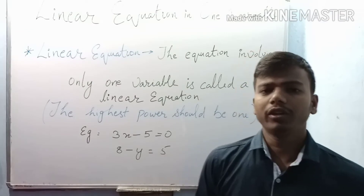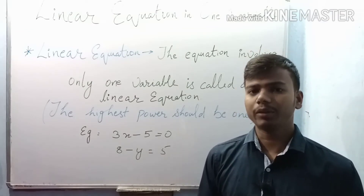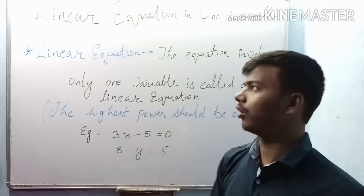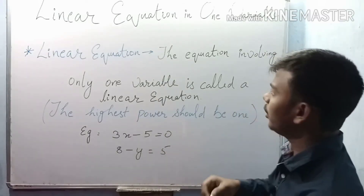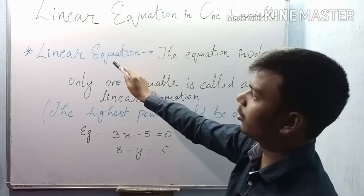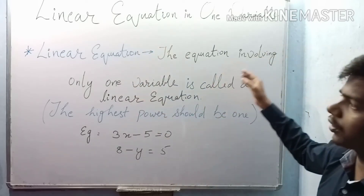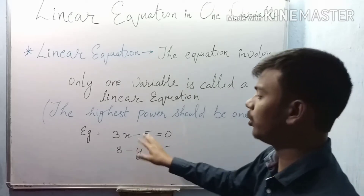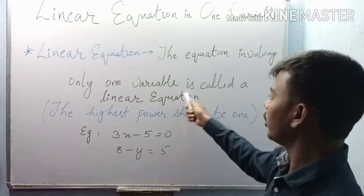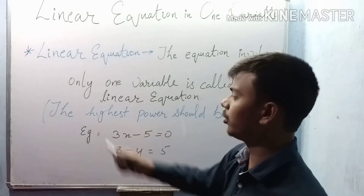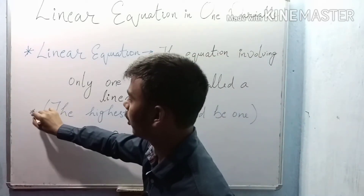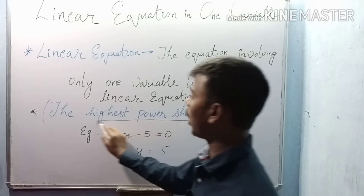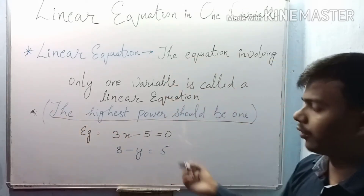So to summarize: an equation is separated by an equal sign and both the LHS and RHS are equal. Now, what is a linear equation? A linear equation is an equation involving only one variable, and the highest power of that variable should be 1. This is an important point — the highest power should be 1.